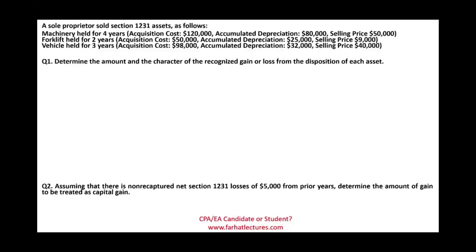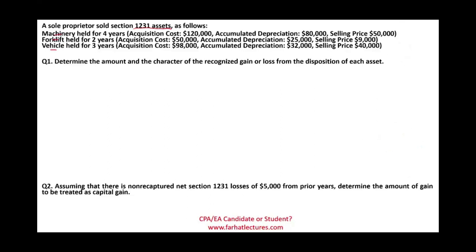Welcome to this session where we look at a CPA simulation dealing with the selling of assets — machinery, forklift, and a vehicle for a business. Those assets are Section 1231 assets, meaning they are used in a business and held more than one year. They are also personal property assets, so we are dealing with Section 1245 assets. We need to know how to treat Section 1245 assets, whether we have a gain or a loss.